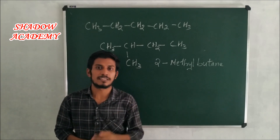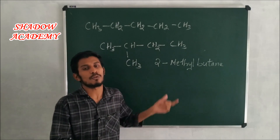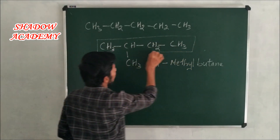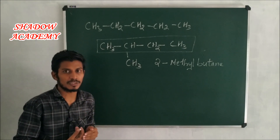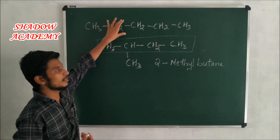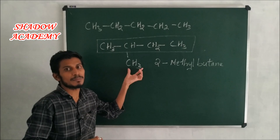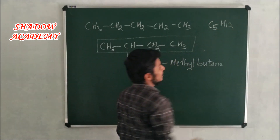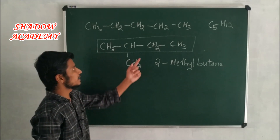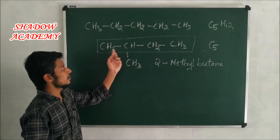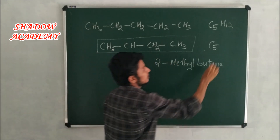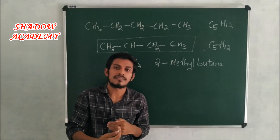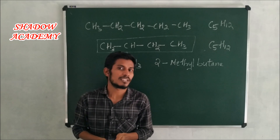There are different types of structural isomers. In chain isomerism, the main chain has 5 carbon atoms in one isomer, but only 4 carbon atoms in another. The branch is not considered the main chain. Both have the same molecular formula C5H12 — 5 carbons and 12 hydrogens — but different structures and different physical and chemical properties. This is chain isomerism.